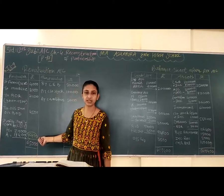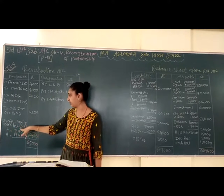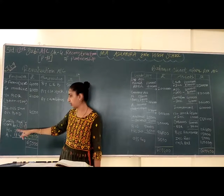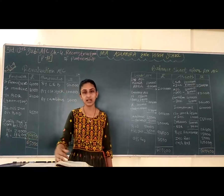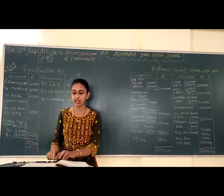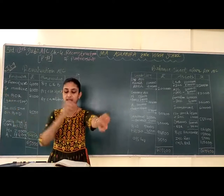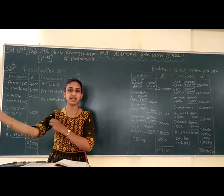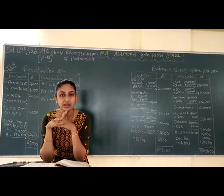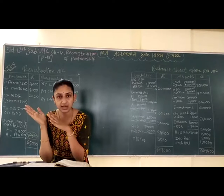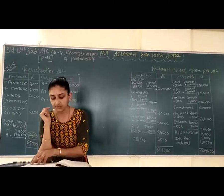Ab yahan pe jo profit aaya — 46,400 — it is distributed amongst Bhardik and Alpesh in the old profit sharing ratio which is 5:3. Agar is tarah se distribute karenge, to Bhardik ko milega 29,000 and Alpesh ko milega 17,400. Ab yah jo profit hai, vo current account mein isliye jayega kyunki inhone jo balance sheet di hai, usme capital account bhi hai aur current account bhi hai. Jab capital and current both accounts are given, it means fixed capital method apply ho rahi hai. To yahan pe saare adjustments current account mein dene hain.